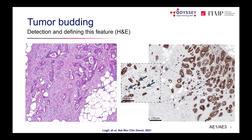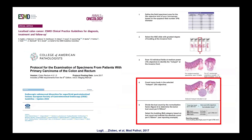H&E is tricky for visualising tumour buds because they may resemble fibroblasts or other cell types. To address this, cytokeratin staining has been used to identify buds more reliably, highlighting epithelial cells — including tumour cells — with clear nuclear, cytoplasmic, and membrane staining.